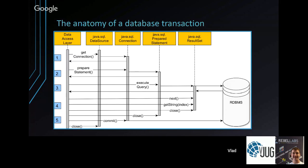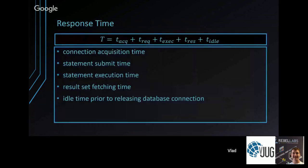Looking at this JDBC diagram, regardless of which data access framework you use, first you need a database connection — that takes time, but we can speed it up with pooling. You then need to get a prepared statement, execute queries, and traverse the result set. Also, if you hold a connection without doing any database work — doing only application-level processing — that hurts scalability because other concurrent requests queue waiting for your connection.